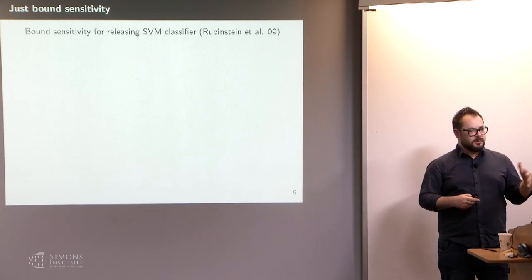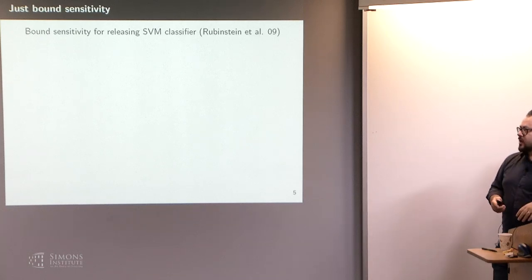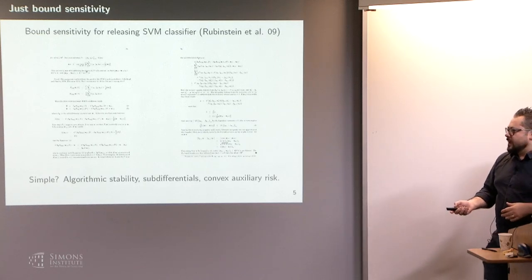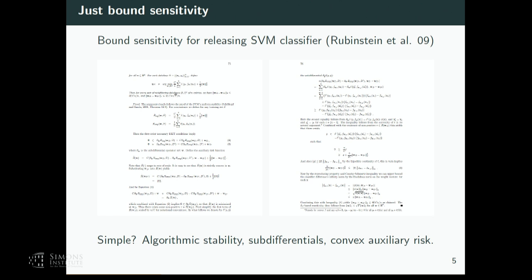Pretty much every talk this week has mentioned global sensitivity at some point. What does bounding sensitivity look like? We were bounding the sensitivity of an SVM — this is not the state-of-the-art way of doing privacy-preserving SVMs, but for some people in the audience it would be easy. At the time, as a grad student, I'm sure I wouldn't have been able to do it without my fantastic advisor. I think it's safe to say a lot of people who might use differential privacy to do something slightly new might find this kind of thing hard.